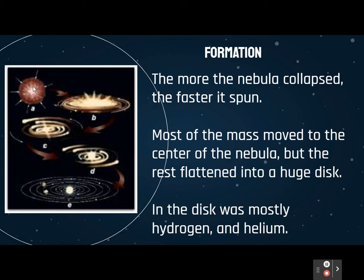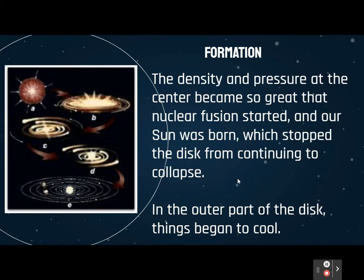Most of the mass in this nebula started to come together at the center and got pulled in, but the rest of it started to flatten out into a disk. The whole nebula is mostly made of hydrogen and helium. The density and pressure at the very center got greater and greater until it became so intense that nuclear fusion started — basically, our sun lit up for the first time. The pressure was so great that hydrogen started combining, and as hydrogen combined to make helium, that released light, and our sun was born.